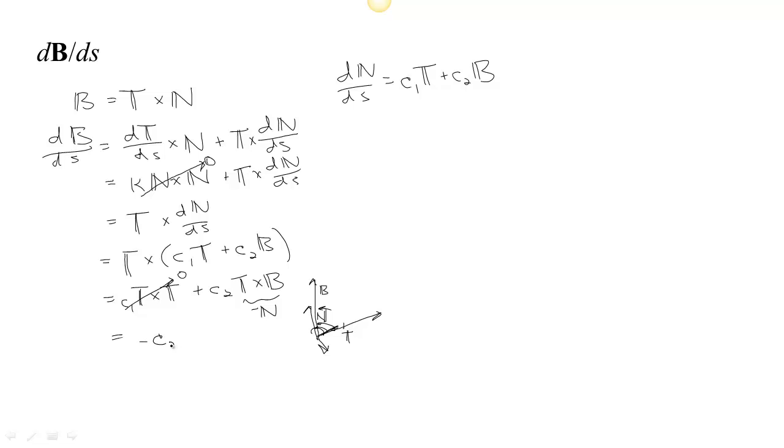And therefore, dB/ds is the opposite of c2 times N. Remember, c2 is how much of dN/ds is in the direction of B. So we have dB/ds is equal to minus c2 N.